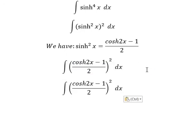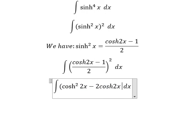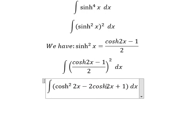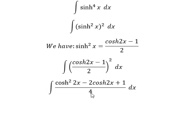And now we need to expand and we have cosh²2x minus 2cosh2x plus 1 over 4. Next we put the 4 outside.